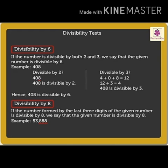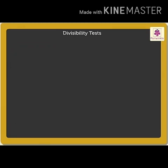For example, 53,888. The last 3 digits are 888. 888 divided by 8 equals 111, so we can say that 53,888 is divisible by 8.